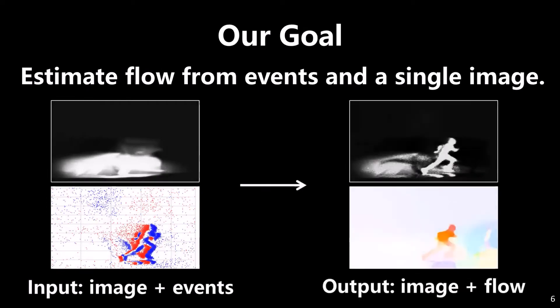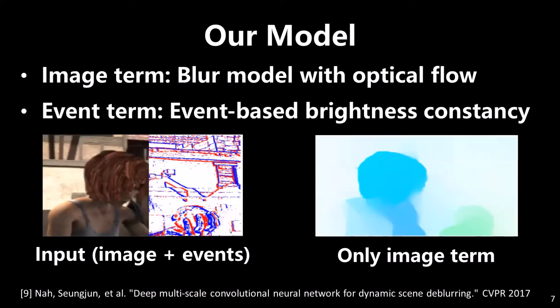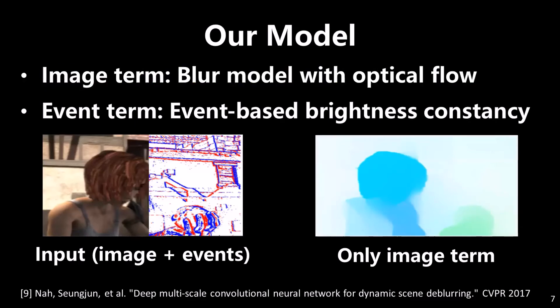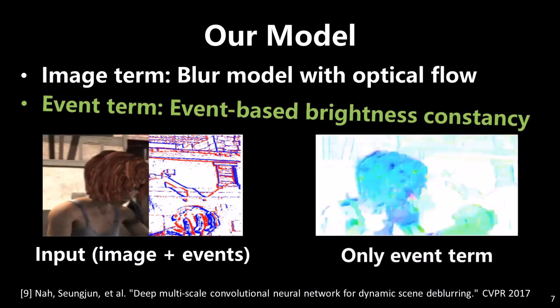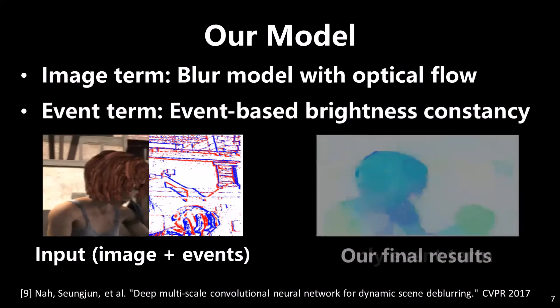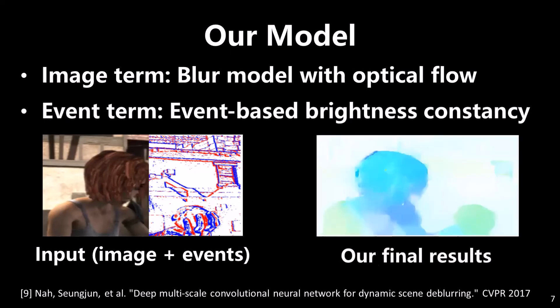Our goal is to estimate flow with the Davis sensor. Our model contains an event term and an image term. We show results with and without each of the two terms separately, and our combined model achieved the best performance.